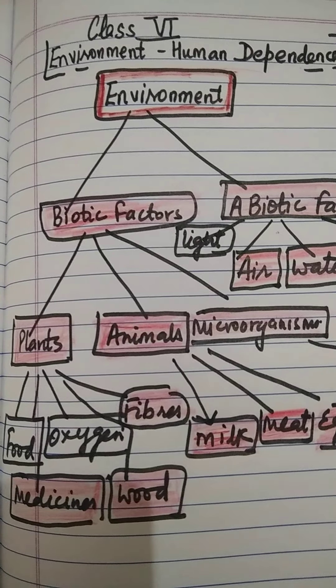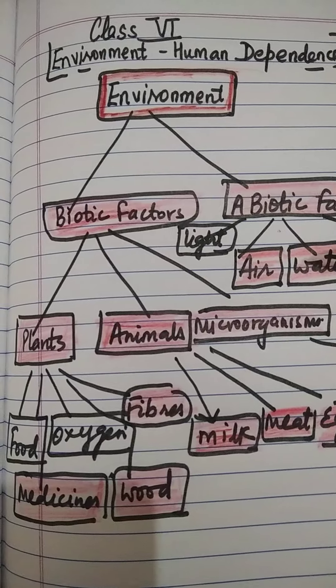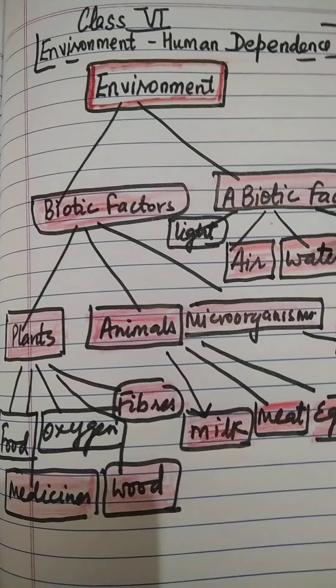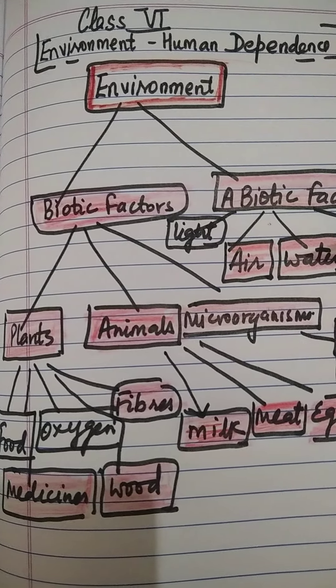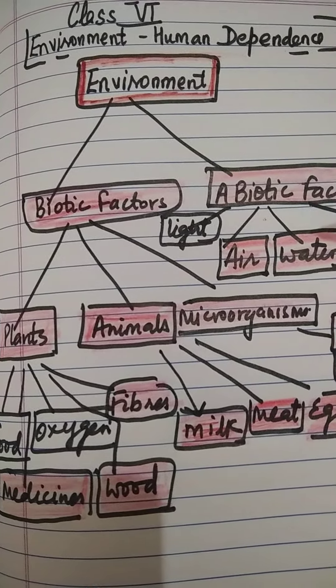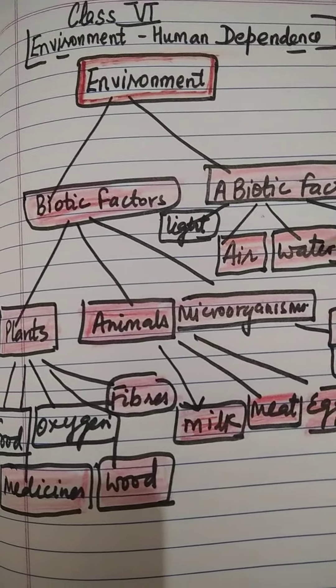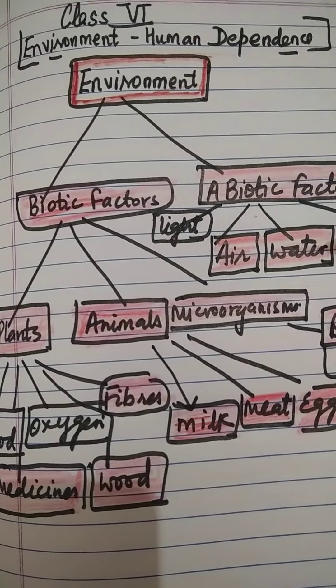It has the right temperature, correct proportion of gases in the atmosphere, and water. The things which are necessary for life are air, water, and food.